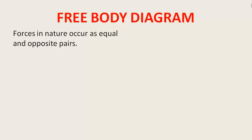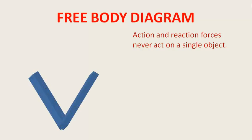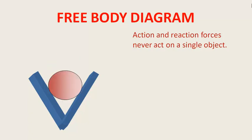Forces हमेशा opposite pairs में आएंगी। Action और reaction forces never act on a single object — इसलिए दोनों का अपना-अपना effect रहता है। देखिए — हमने एक V-shape body ली और इसमें एक cylinder डाल दिया। Cylinder का weight mg downward लगेगा, और दोनों sides से F1 और F2 normal reaction forces लगाएंगे। F1 और F2 दोनों के vertical components mg के बराबर होंगे।